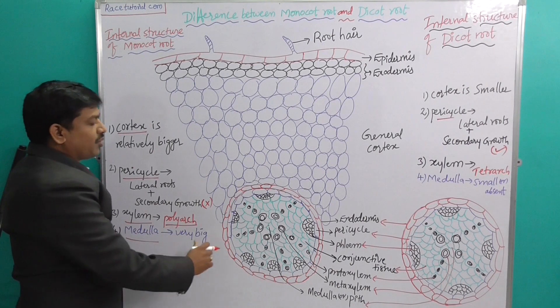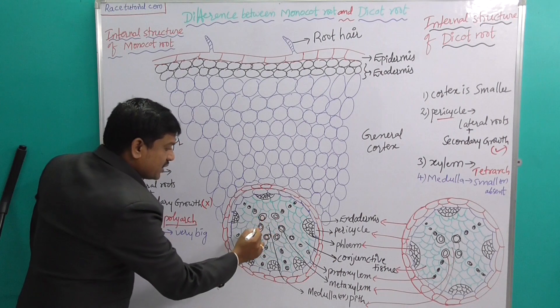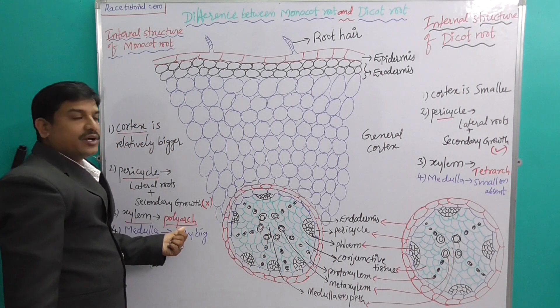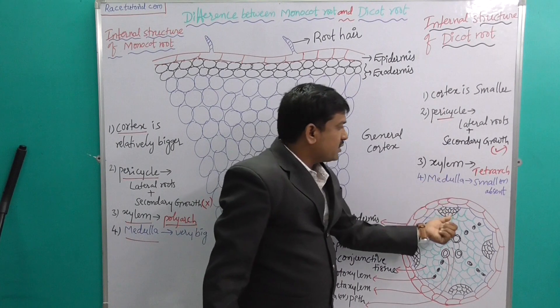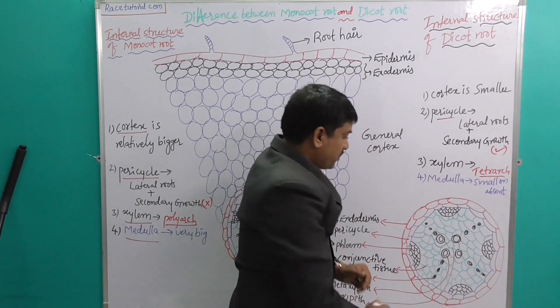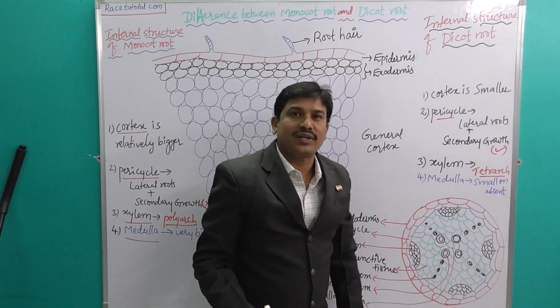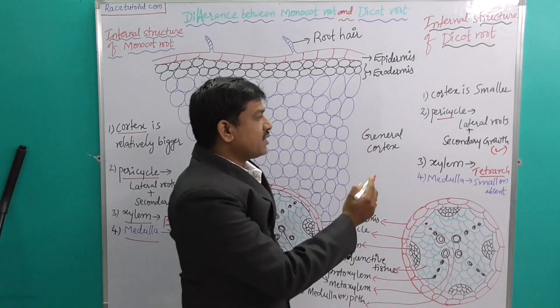The xylem in monocot shows polyarch condition - more than six xylem parts are there. In dicot, the xylem shows tetrarch condition - one, two, three, four - only four xylem parts. This is called tetrarch condition.